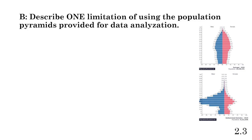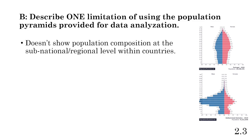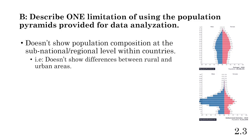Part B: describe one limitation of using the population pyramids provided for data analysis. You could talk about these pyramids specifically or population pyramids in general, since we're usually looking at country-level data. One key limitation is we don't know what's happening within the countries — we can't see regions with lots of elderly people or areas with many young people like a college town. It doesn't show population composition at a subnational or regional level. For example, a US pyramid won't tell us what's happening in North Dakota, Oklahoma, or Nebraska.